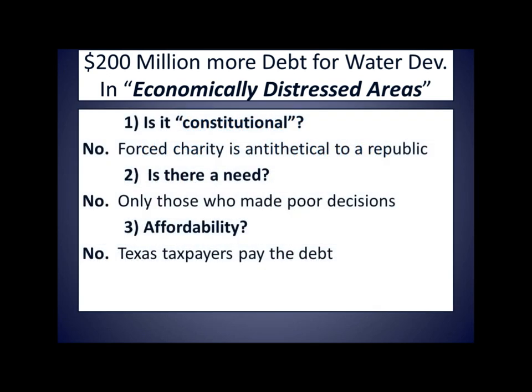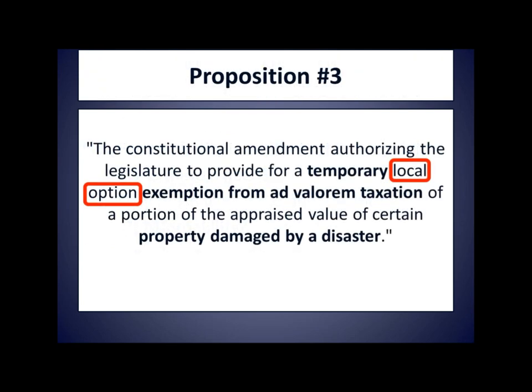On to my three questions for Proposition 2. Is it constitutional? No — taking money from Texas taxpayers to provide entitlements to others is antithetical to a republic. Is there a need? No — only those who chose to settle on land without sanitation services benefit, while other communities tax their own residents to pay for these same services. Continuing to tax all Texans to promote dependent lifestyles is counterproductive to liberty. Is it affordable? No — any increase in taxes is unaffordable, and some of these bonds don't have to be paid back, leaving Texas taxpayers holding the debt.